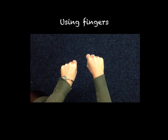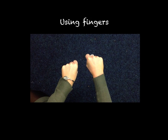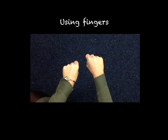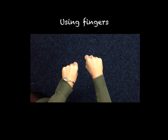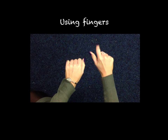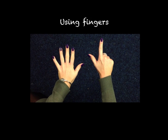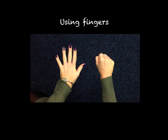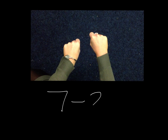When children are confident using objects to subtract, we encourage them to use different methods such as their fingers. So if we were to solve the question 7 take away 2, we would ask the child to start with 7 fingers and then take away 2. How many fingers are left? Again we would ask the children to write this as a number sentence. So 7 take away 2 equals 5.